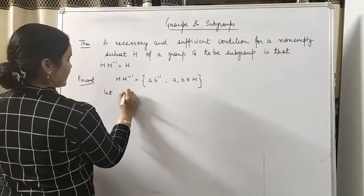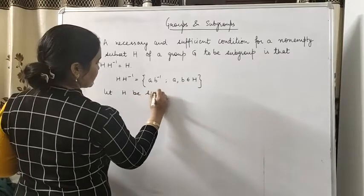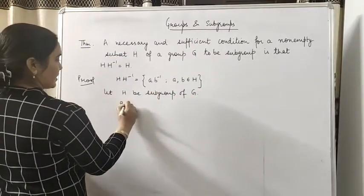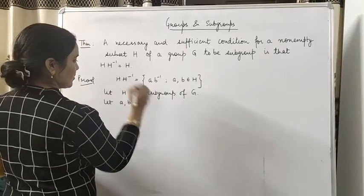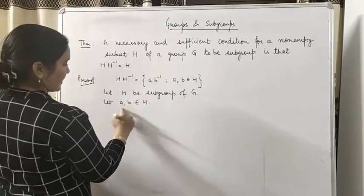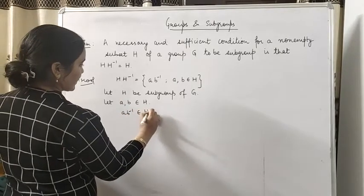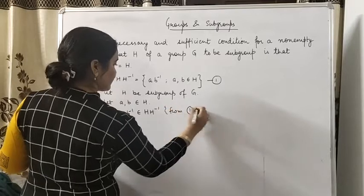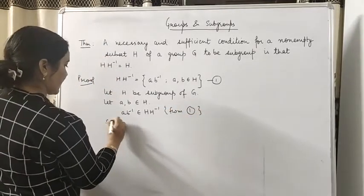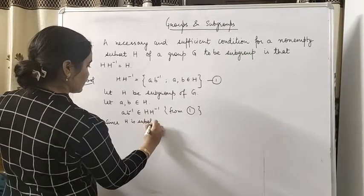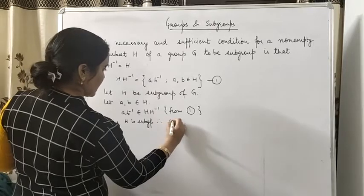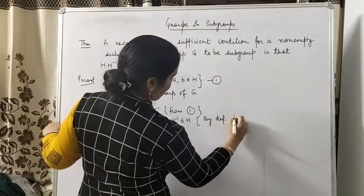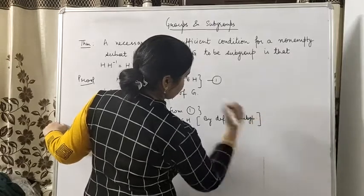First, let us suppose let H be subgroup of G. Let A, B belongs to H. और अगर A, B H में है तो A·B⁻¹ कहाँ पे चला गया? H·H⁻¹ में — from (1). Since H is subgroup, therefore A·B⁻¹ also belongs to H by definition of subgroup. Clear?